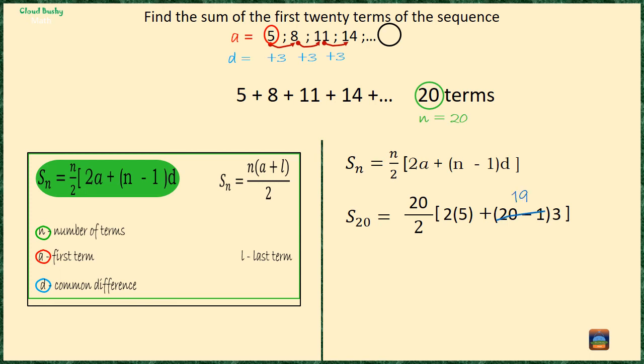20 minus 1 is 19, so we have 20 divided by 2 which is 10, times [2 times 5, that is 10, plus 19 times 3, which is 57]. 10 plus 57 is 67. That means the sum of the first 20 terms of the sequence is equal to 10 times 67, that will give us 670.